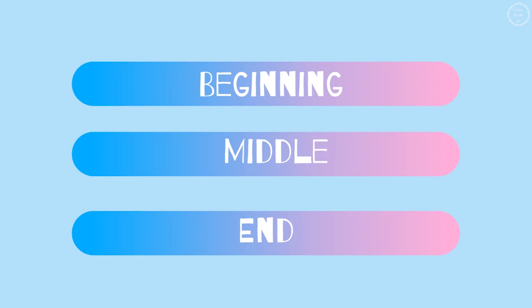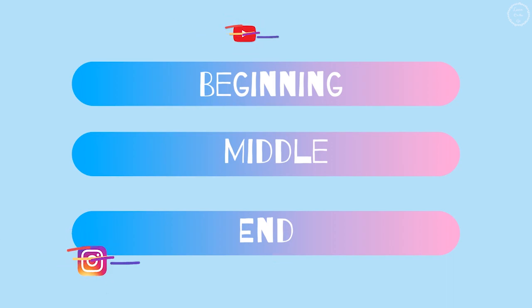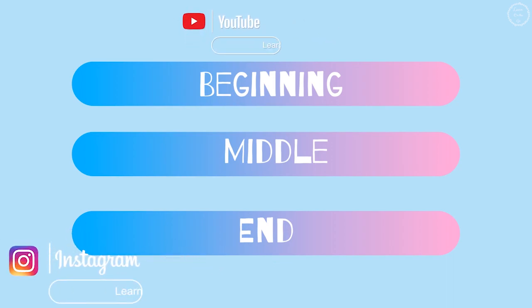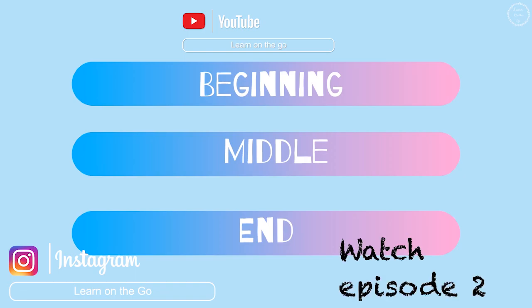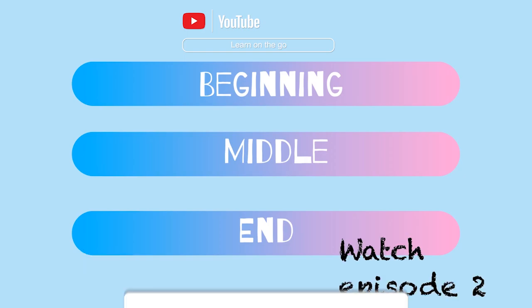Here we have the next three elements of a story: the beginning, the middle, and the end. The beginning is where we introduce the characters and the setting using descriptive language or adjectives. The middle is where the interesting events take place — the problem and the solution of the story. The end is where the characters reflect upon the events that took place and where they learn a lesson. Now that you know the parts or the elements of a story, watch episode 2 to get started in writing your imaginative story.